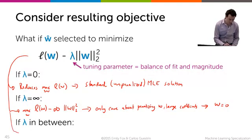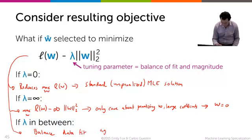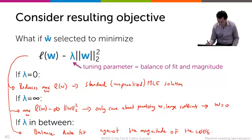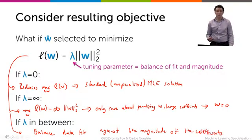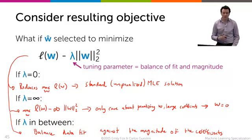So the area that we care about is somewhere in between. So a lambda between 0 and infinity, which balances the data fit against magnitude of the coefficients. Very good. So we're going to try to find the lambda that is between 0 and infinity that fits our data well.